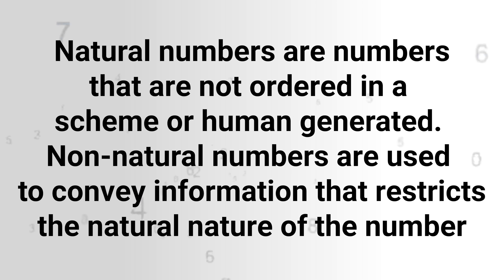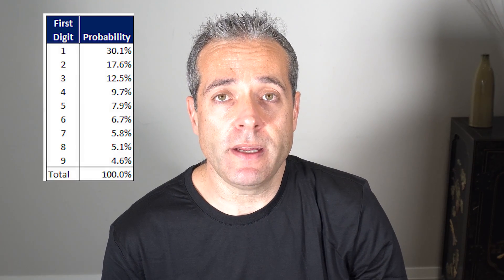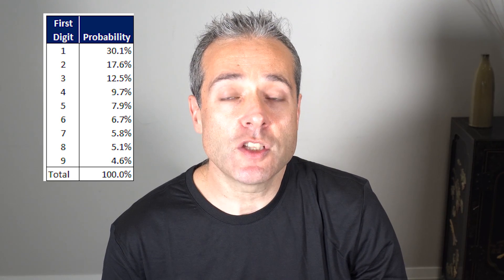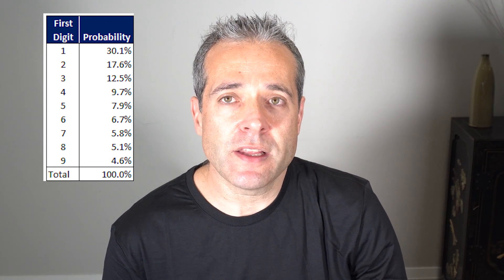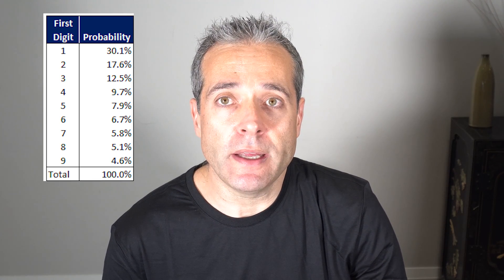Let's say, for example, that you have a three-digit payment amount. What are the odds that the first digit would be three? Well, you might think that the odds are one in nine — in other words, there is an equal chance that the first digit would be a one, a two, a three, and so on up to nine. But Benford's law says that the odds are not random. In fact, there is a 12.5% chance that the first digit will be a three, and there is a 30.1% chance that the first digit will be a one.